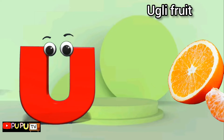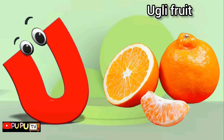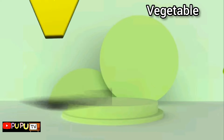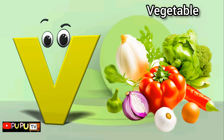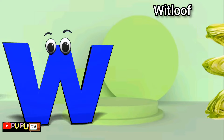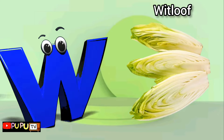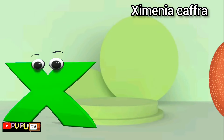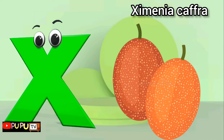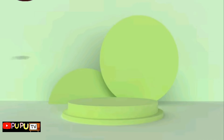U is for ugly fruit, ugly fruit. V is for vegetables, vegetables. W is for white loaf, white loaf. X is for ximenia, ximenia.